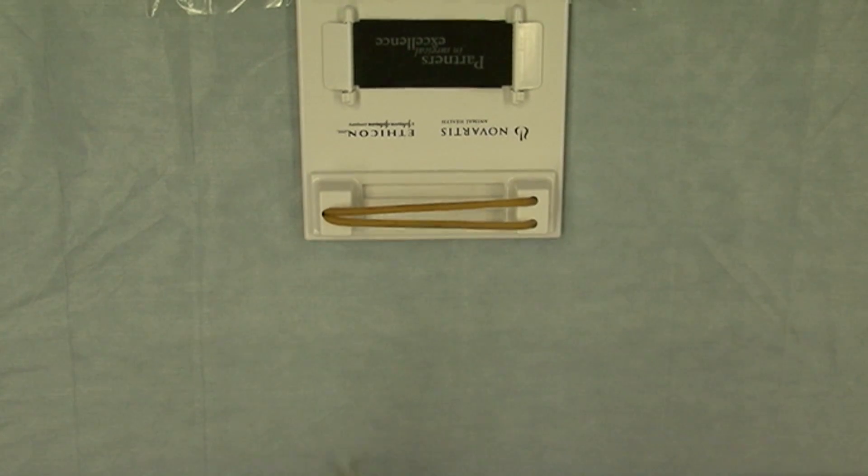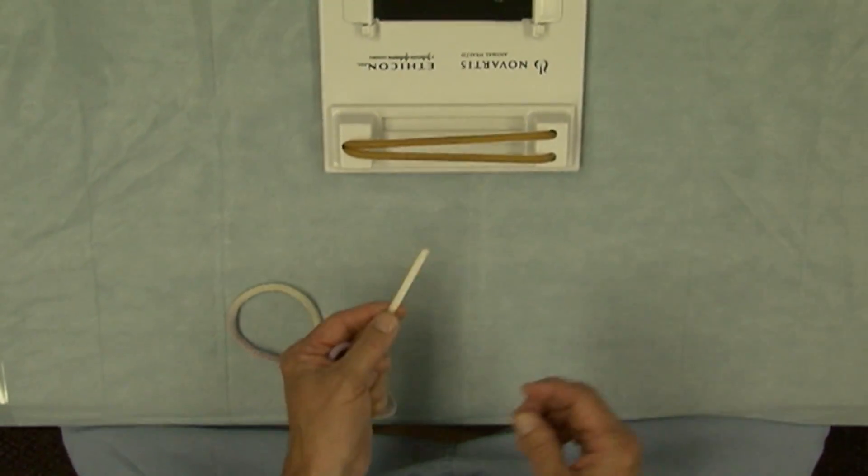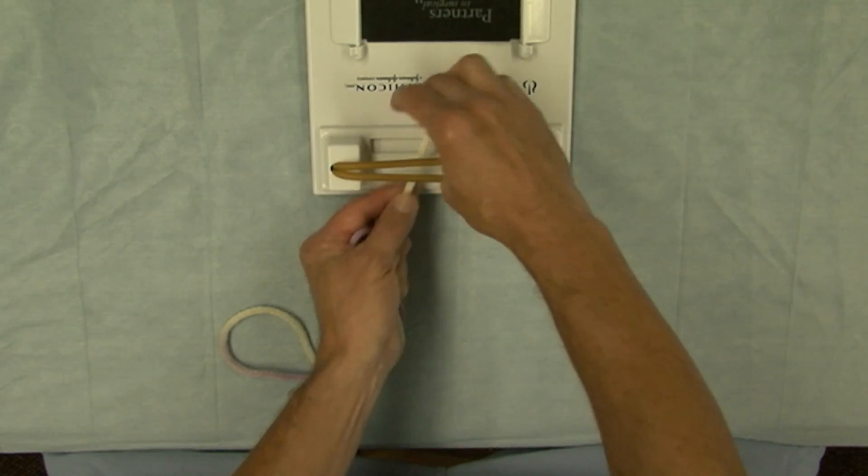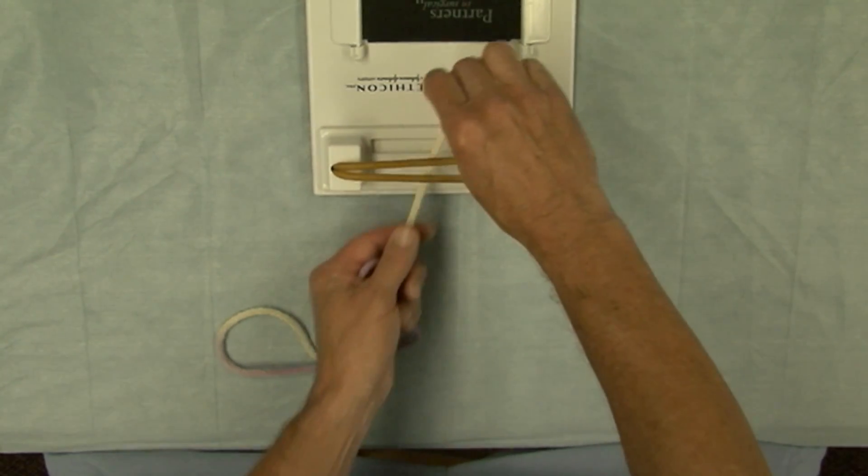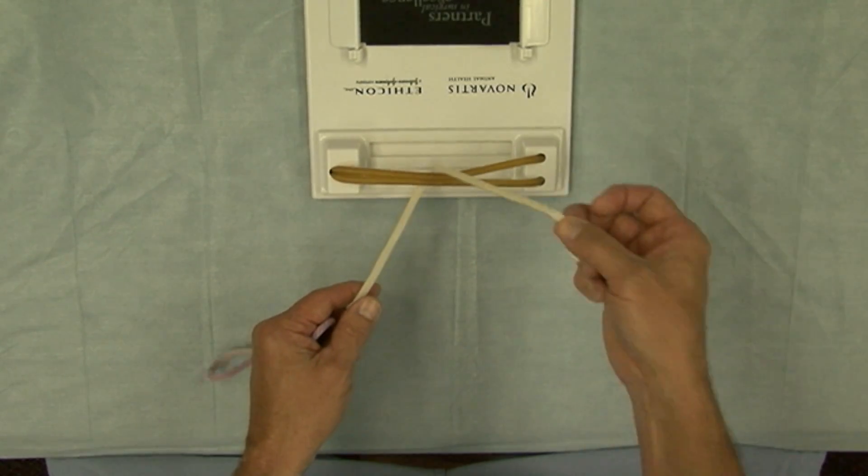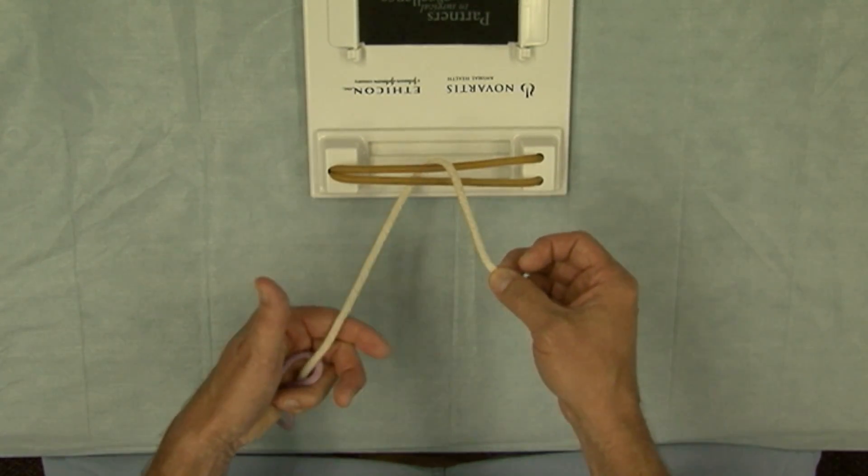I'm now going to demonstrate a surgeon's knot created using a two-hand hand-tie technique. As I demonstrated with the simple square knot, I'm going to pass the suture, the short end of the suture around the knot board such as this with the short end now in my right hand and the long end here coiled in my left hand.